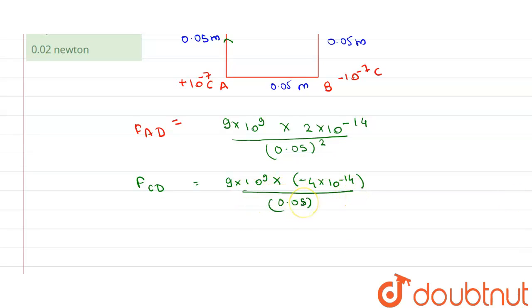So this is the value of force on D due to B, F_BD. This will be equal to 9×10^9 into 2×10^-14 upon (0.05)².